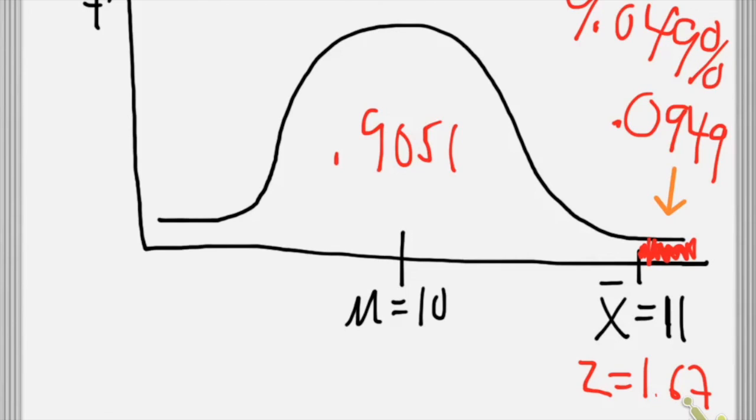So what's the probability of randomly selecting a sample of size 25 from this population that would have a mean of 11 or higher? The probability is 0.0949, or about 9.49%. That's about 10%. That tells us if we were doing a test of statistical significance, that this sample mean would not be considered significantly different from the population mean, because normally we use an alpha level of 0.05. This p-value is larger than 0.05, so it wouldn't be considered statistically significant.